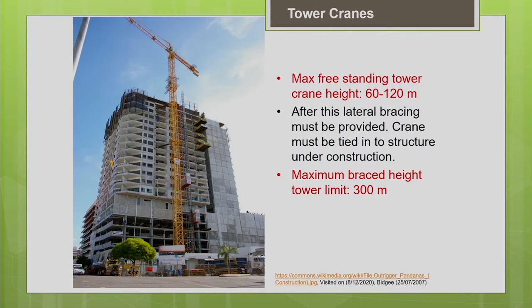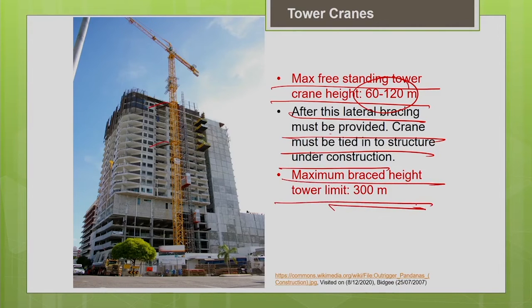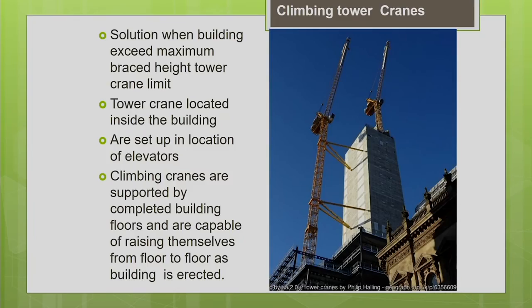The maximum free-standing tower crane height permissible is 60 to 120 meters. Beyond 120 meters, the tower crane must be laterally braced to the nearby structure to transfer the overturning moment. Even with bracing, the maximum braced height possible is only 300 meters — beyond 300 meters, even braced cranes are not allowed from a stability perspective.